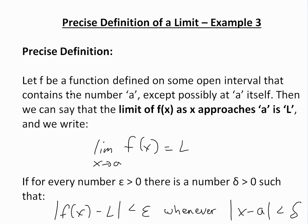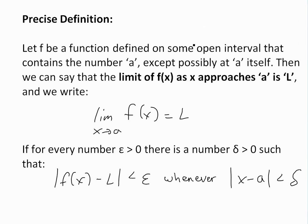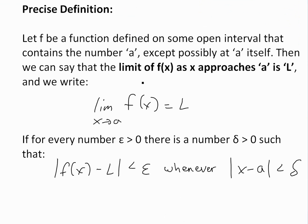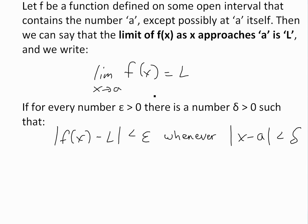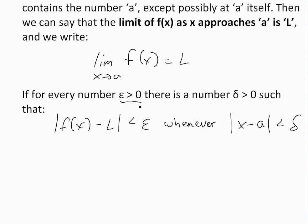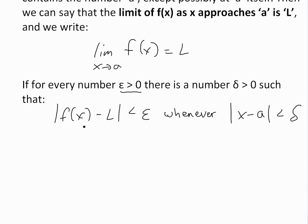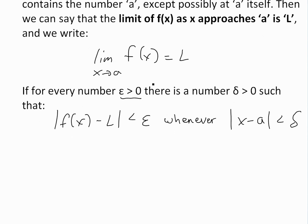Basically, the precise definition — I'll recap before I get to it. Let f be a function defined on some open interval that contains the number a, except possibly at a, so it doesn't need to be defined there, just the limit as it approaches has to be. Then we can say the limit of f(x) as x approaches a is L, if for every number epsilon greater than 0, there's a number delta greater than 0, such that |f(x) - L| is less than epsilon whenever |x - a| is less than delta.